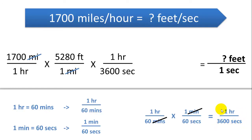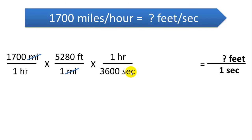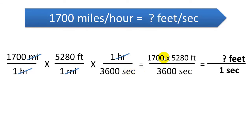We plug those numbers into the equation. Now we can cancel out the hours and simplify. We get 1,700 times 5,280 with feet on top, and 3,600 seconds on the bottom — all other units have canceled out. It's important to draw a line through units as you cancel them so you can track the final units. Here we have feet over seconds, exactly what we want. Multiplying and dividing gives us 2,493 feet per second.